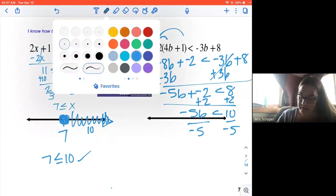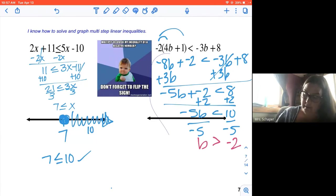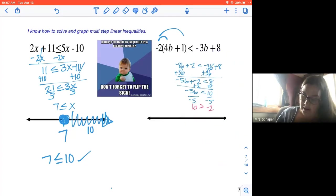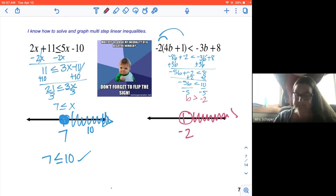That means I need to flip the sign. It becomes a greater than symbol. And so I've got that B is greater than negative two. Remember to flip the symbol when that happens. Here we go. So negative two, open circle, shade to the right. B is more.